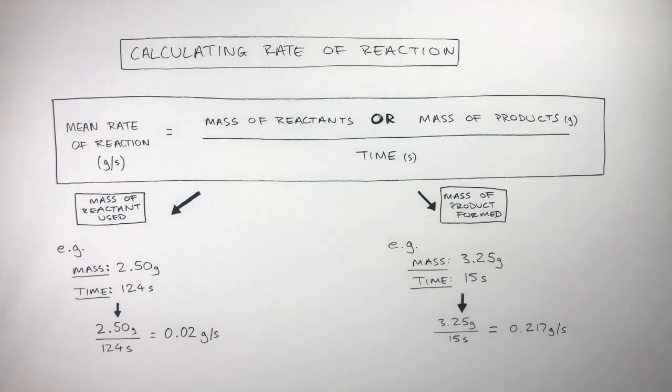The higher the number, the faster the rate of reaction. The lower the number, the slower the rate of reaction.